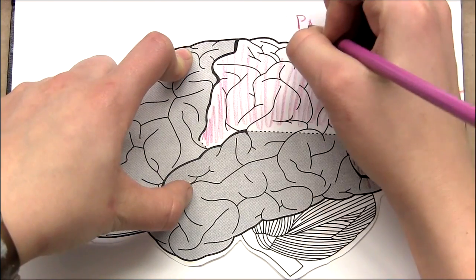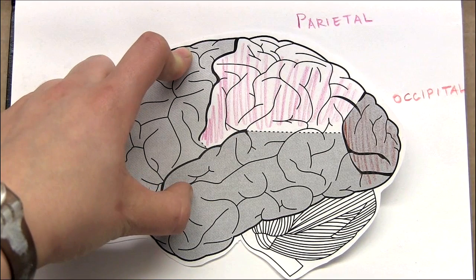At the top of the head is the parietal lobe, which stores sensory data from the body. In fact, the brain's folds have been mapped to certain body parts.